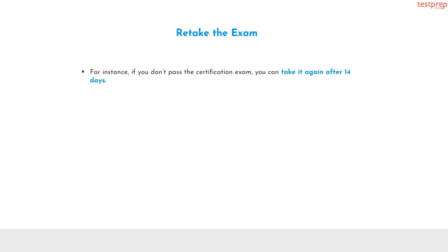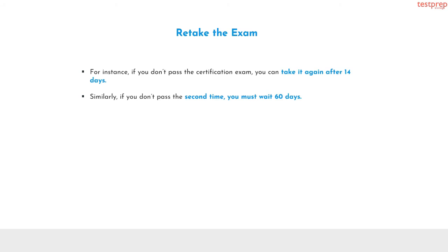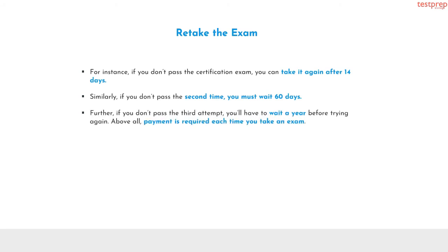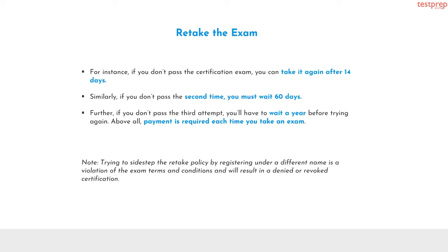Now we will talk about retaking the exam. If you don't pass the certification exam, you can take it again after 14 days. If you don't pass the second time, you must wait 60 days. If you don't pass the third attempt, you'll have to wait a year before trying again. Above all, payment is required each time you take an exam. Note: trying to sidestep the retake policy by registering under a different name is a violation of the exam terms and conditions and will result in a denied or revoked certification.